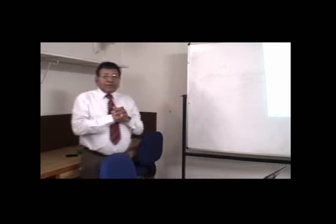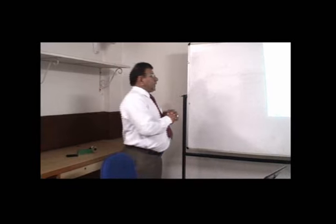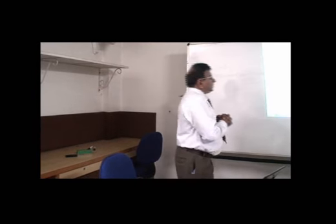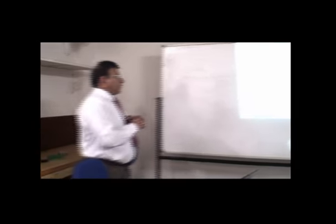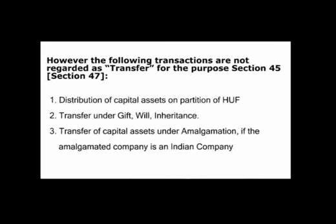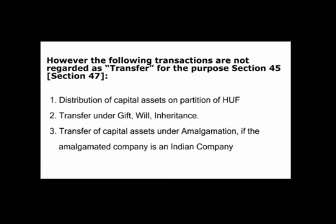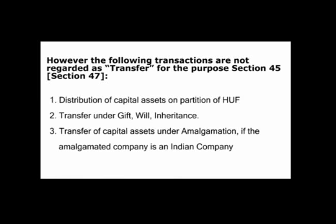Now we have learned what is included in the transfer. We will now try to understand what is not included in the transfer — meaning what is not regarded as transfer for the purpose of the charging section 45. The first item not included is the distribution of capital assets on the partition of a Hindu Undivided Family (HUF). If there is any distribution of capital assets made at the partition of an HUF, then it will not be deemed to be a transfer for the purpose of section 45.